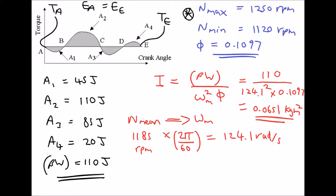To recap: we determined the maximum fluctuation in energy (110 joules) from the torque-crank angle diagram. We then calculated the coefficient of fluctuation of speed using the maximum, minimum, and mean speeds. Finally, we calculated the required moment of inertia of the flywheel (0.0651 kg·m²) needed to maintain speed between 1250 RPM and 1120 RPM, based on the energy provided throughout the cycle.